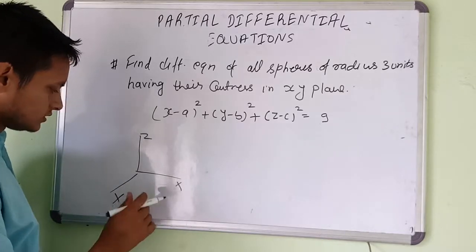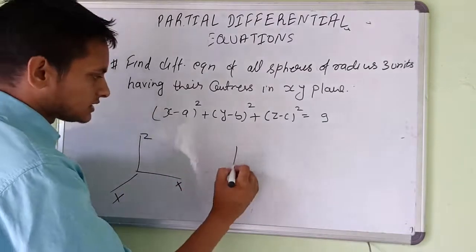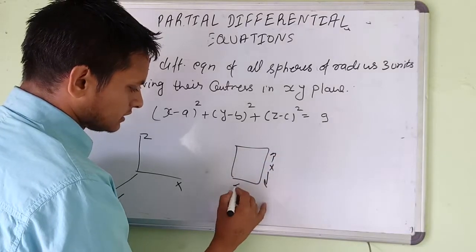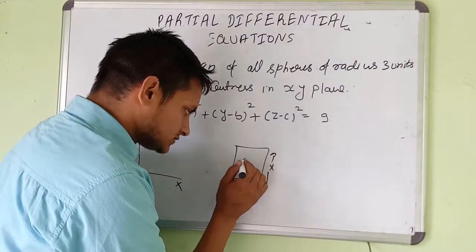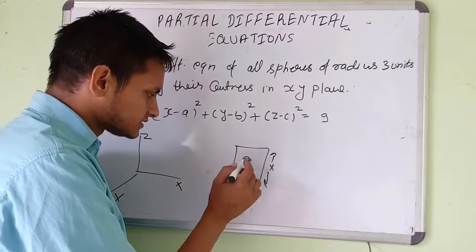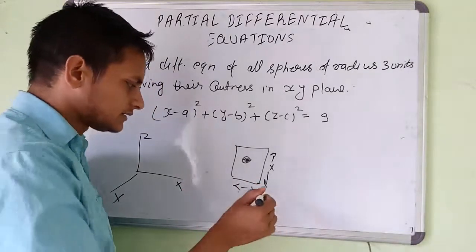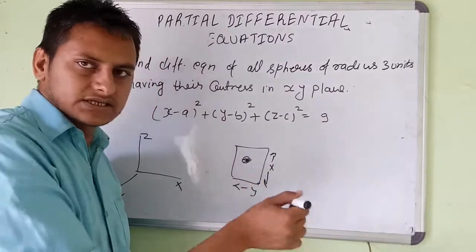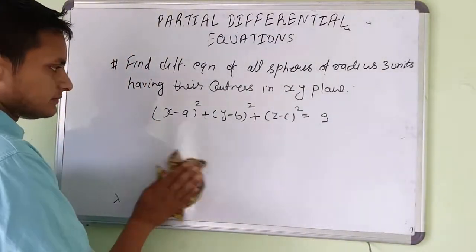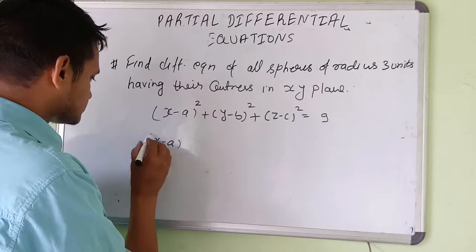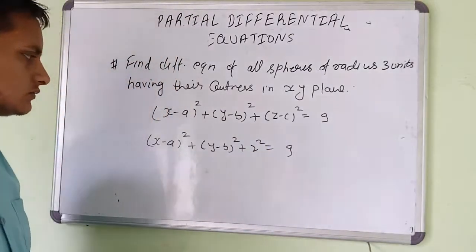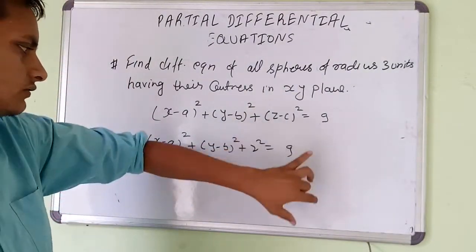The center lies on the xy-plane — this is the x direction and this is the y direction. Since the center lies on this plane and z is perpendicular to it, the value of z for the center will be zero, so c = 0. The equation becomes (x-a)² + (y-b)² + z² = 9.